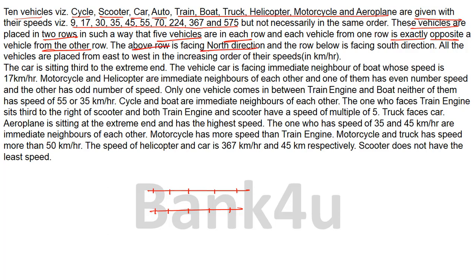The above row is facing north direction. So there are two rows — this is the first and this is the second. The above row faces north, and the row below faces south. All the vehicles are placed from east to west in the increasing order of their speed in kilometers per hour. East is this side and west is this side.